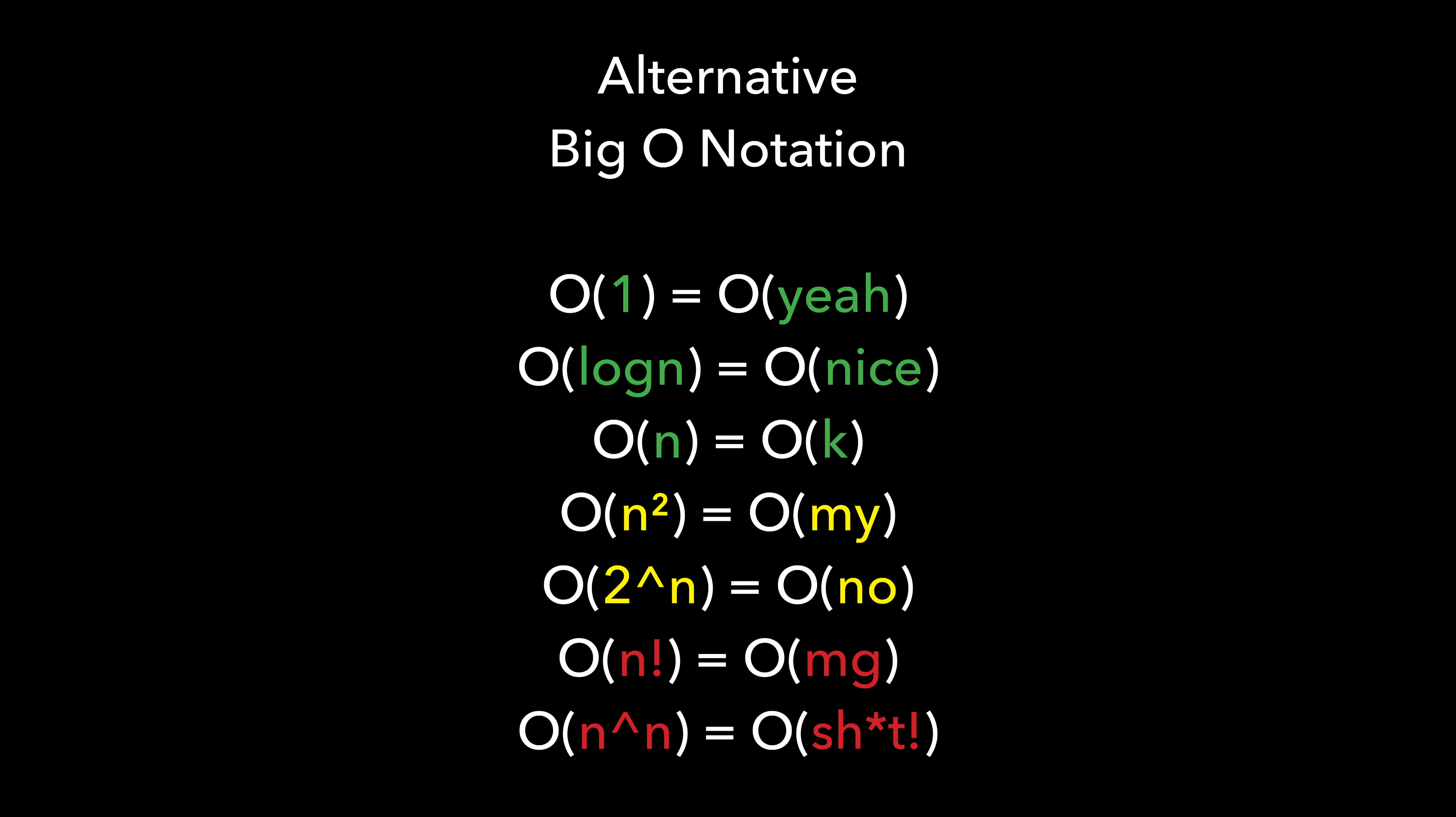Alternative Big O Notation. If you were wondering what the thumbnail of this video was about, hold on tight. I have compiled an alternative version of the Big O Notation. I always found things easy to remember when they rhyme, especially with humor. So here's my take on Big O Notation which can help you to remember the rankings of Big O Types. O(1) is O yeah, O(log n) is O nice, O(n) is OK, O(n^2) is O my, O(2^n) is O no, O(n!) is O my God, O(n^n) is O shit.